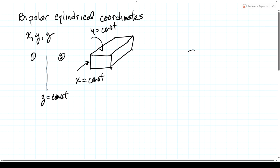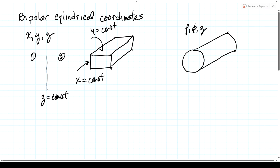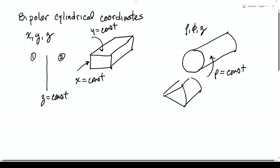Rectangular coordinates would not lead to a tractable problem if we wanted to describe a circular waveguide. But in that case, we have circular cylindrical coordinates — rho, phi, and z — and the surface is simply described by rho equal to a constant. Or a variation is a wedge-type shape where one piece of the surface is rho equal to a constant and the other two are phi equal to a constant.